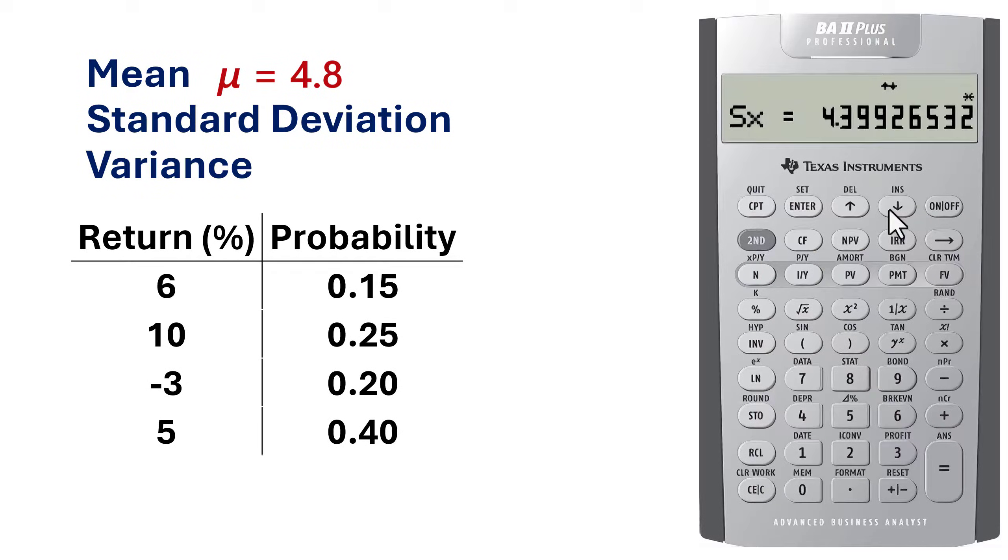Scroll down. This is the sample standard deviation which is not meaningful for us. Scroll down. Now, this is the population standard deviation. That is, the standard deviation of the returns in this distribution is 4.38.